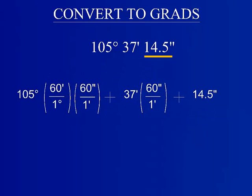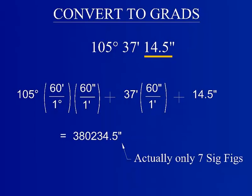There are 60 minutes in one degree and 60 seconds in one minute. Convert the degrees and minutes segments of this measurement appropriately. This number can be adequately represented with seven significant figures.